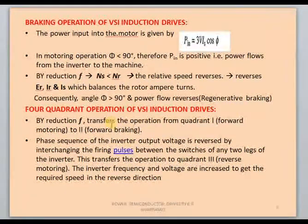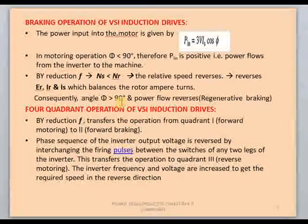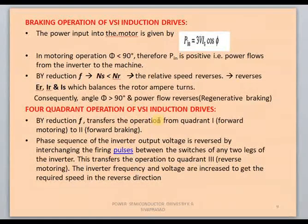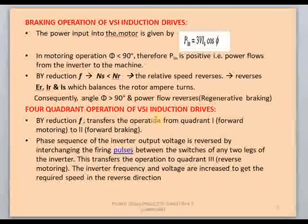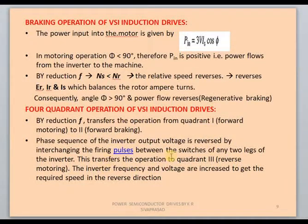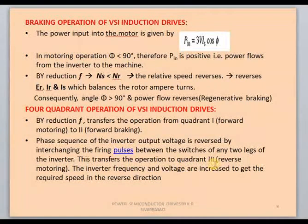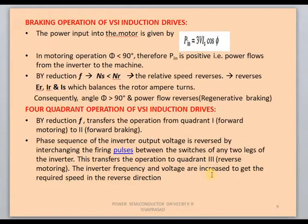For four-quadrant operation of VSI: we already converted the machine from forward motoring (first quadrant) to forward braking mode by reducing frequency. For third and fourth quadrant operations, the phase sequence of the inverter output voltage is reversed by interchanging the firing pulses between the switches of any two legs of the inverter. This transfers operation to quadrant three (reverse motoring). Then inverter frequency and voltage are increased to get the required speed in reverse direction.